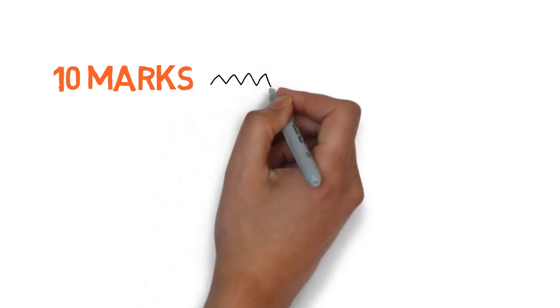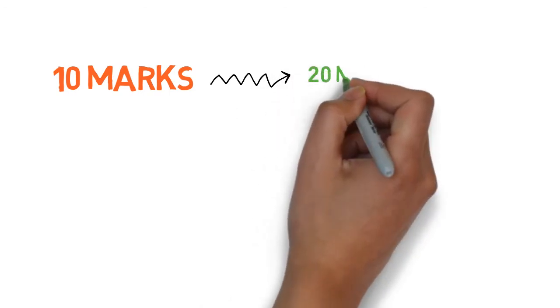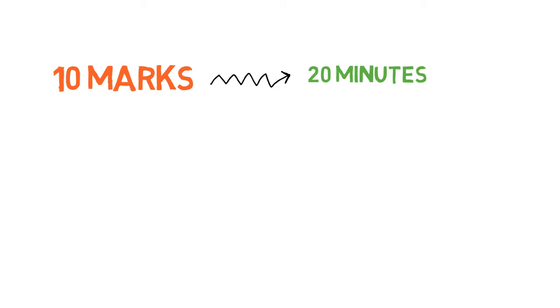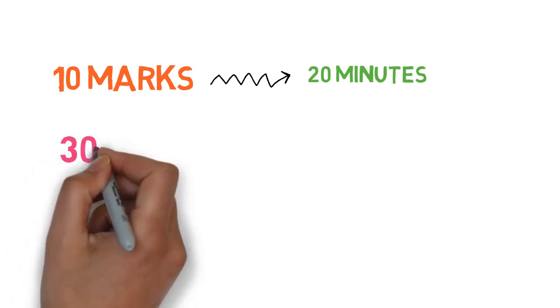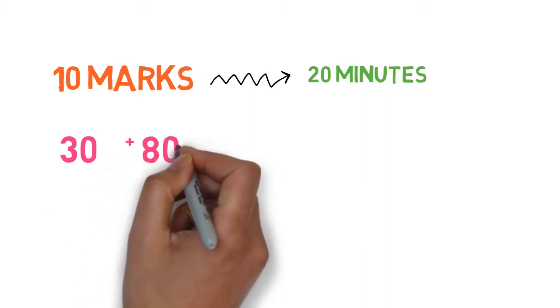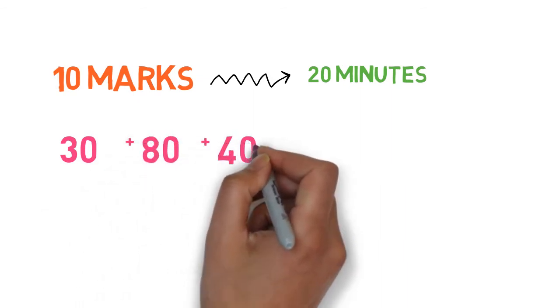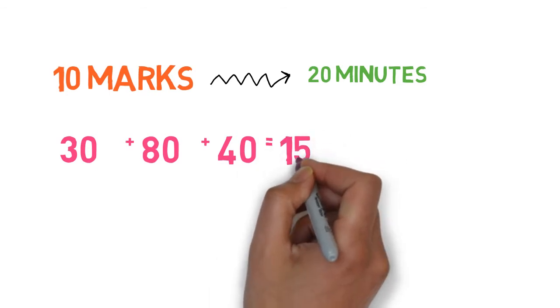Next, attempt 10 mark questions. For these 10 mark questions, you allot 20 minutes for each. So finally, you have taken 30 minutes for 3 markers, 80 minutes for 5 markers and 40 minutes for 10 markers.